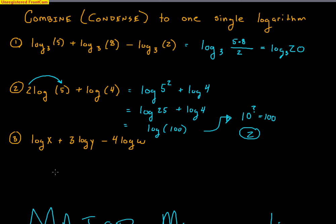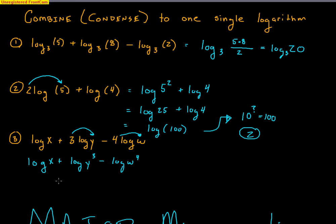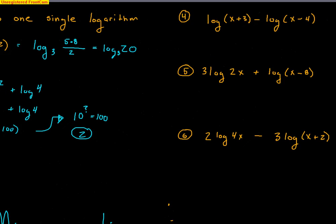One more: log of x plus 3 log y minus 4 log w. First, put the exponents back up: log of x plus log y cubed minus log w to the fourth. Then combine them all: log of x times y cubed — because those were added, so they become multiplication — divided by w to the fourth, because of the subtraction. Put parentheses around all of that to make sure it's the log of that entire value: x times y cubed all divided by w to the fourth.